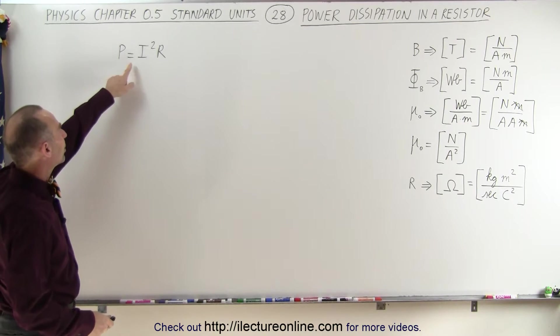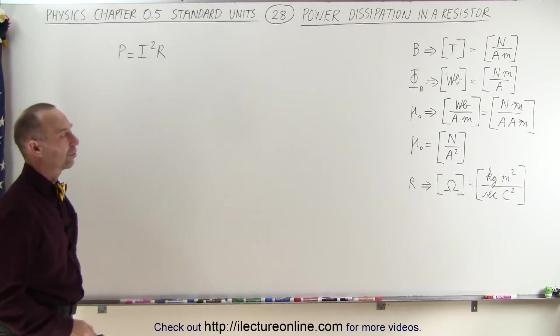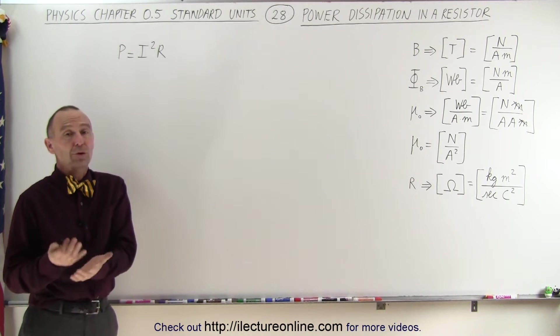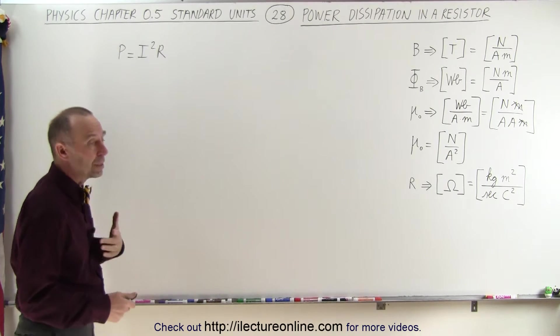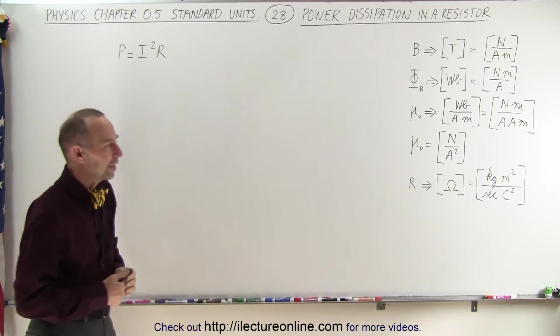The equation tells us that it's equal to the current squared times the resistance. Now, we know the units for power is watts, joules per second, so the units of I squared times R should indeed be joules per second. Let's find out if they are.